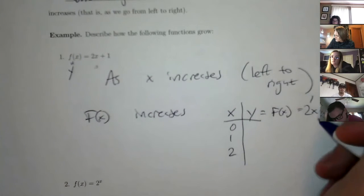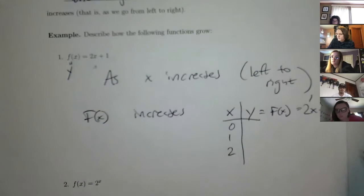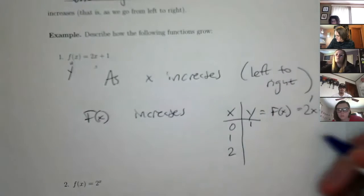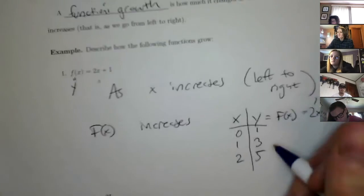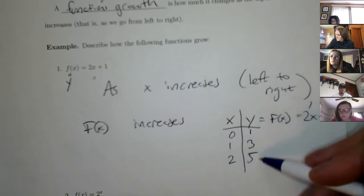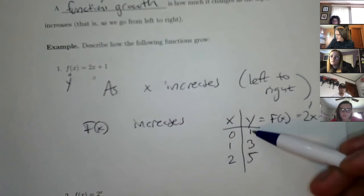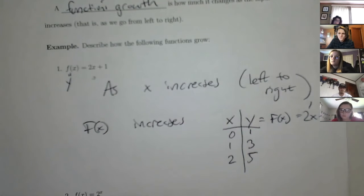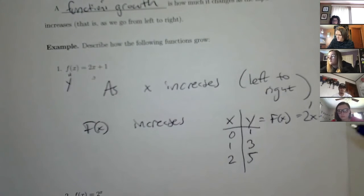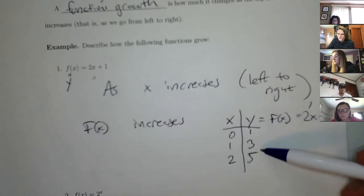So I plug in 0 and I get 1. I plug in 1 and I get 3. And finally 2, I get 5. So if you're looking at this function very explicitly, you can see that every time your x coordinate goes up by 1, your y coordinate goes up by 2. So your function's behavior as x is increasing is that you keep adding 2 each time.